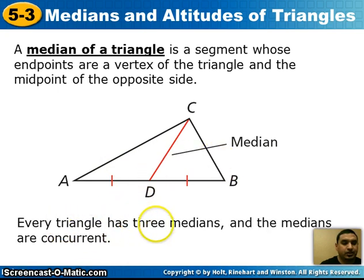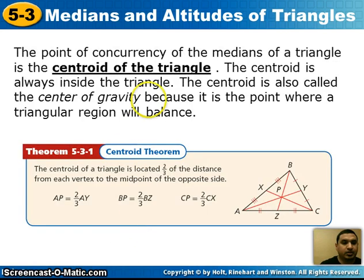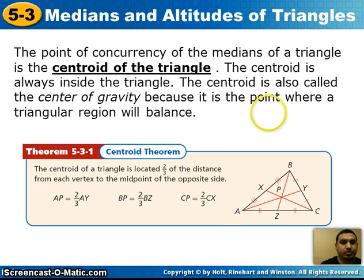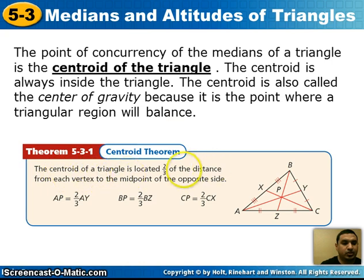Every triangle has three medians and the medians are concurrent. The point of concurrency of the medians of a triangle is the centroid of the triangle, and the centroid is always inside the triangle. The centroid is also called the center of gravity because it is the point where a triangular region will balance. The centroid theorem states that the centroid is located two-thirds of the distance from each vertex to the midpoint of the opposite side.